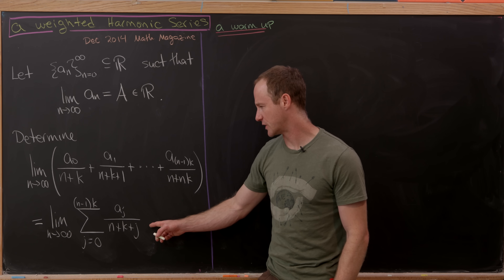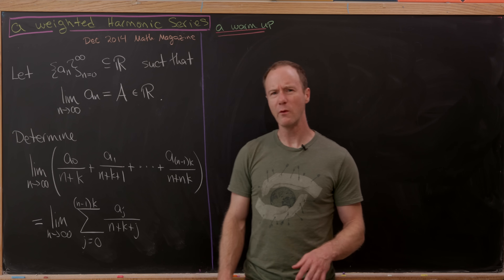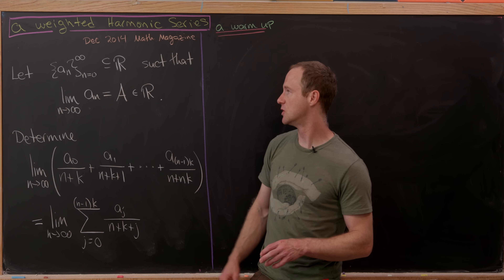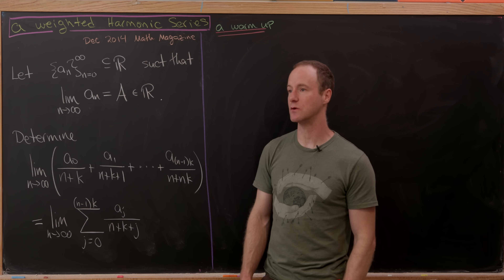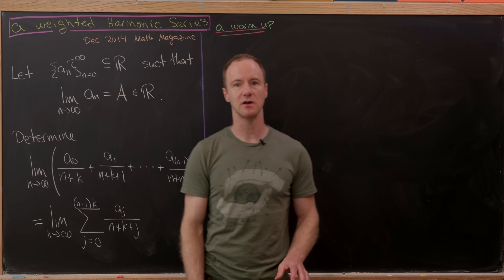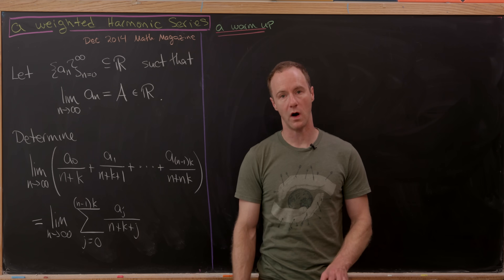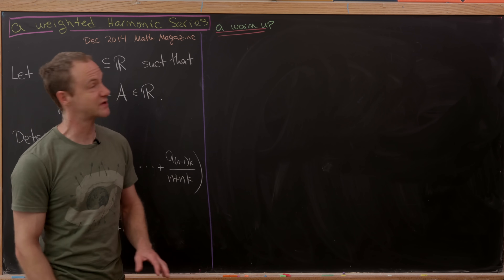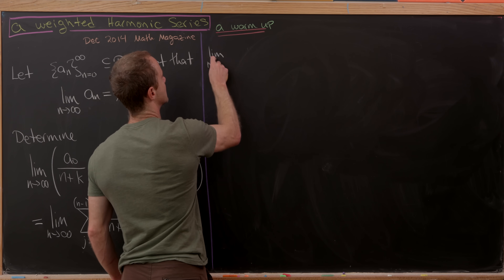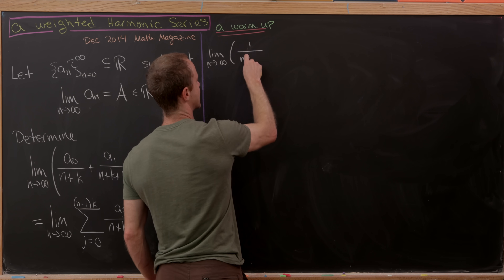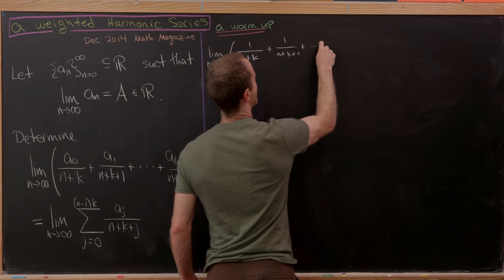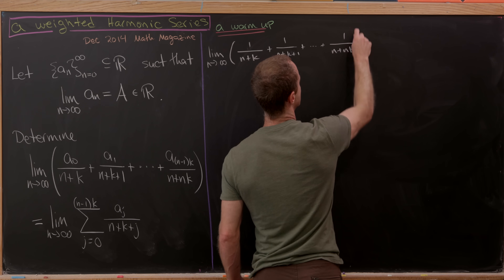We could write that in summation notation. But what would be the simplest version of this problem? Probably the case when aₙ is a constant sequence. If it's constant, we can factor all terms out. So let's look at the case when all the numerators are 1 — that's a well-known problem. As a warm-up, we look for the limit as n goes to infinity of 1/(n+k) + 1/(n+k+1) + ... + 1/(n+nk).